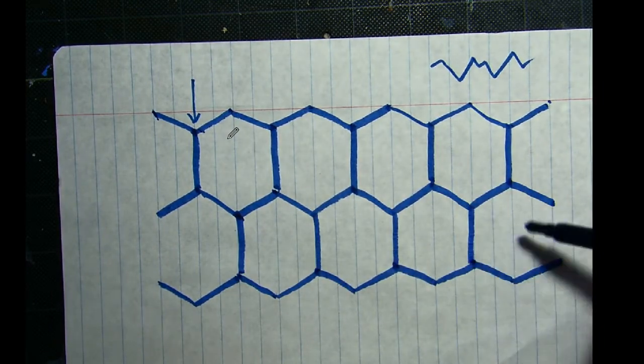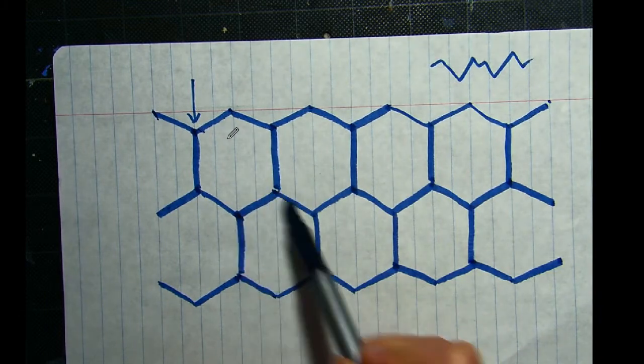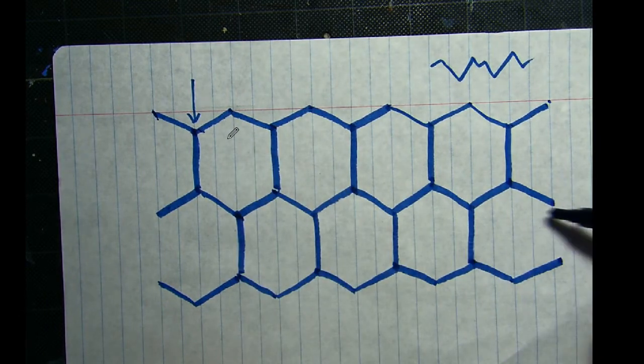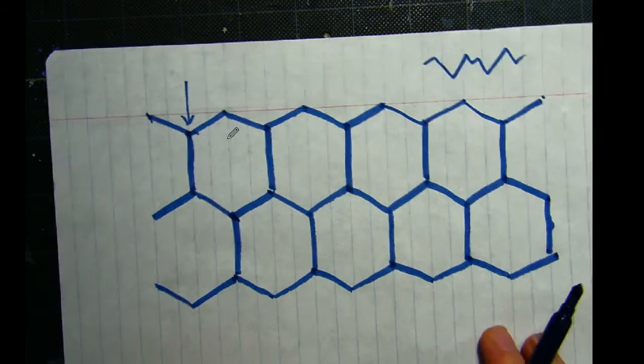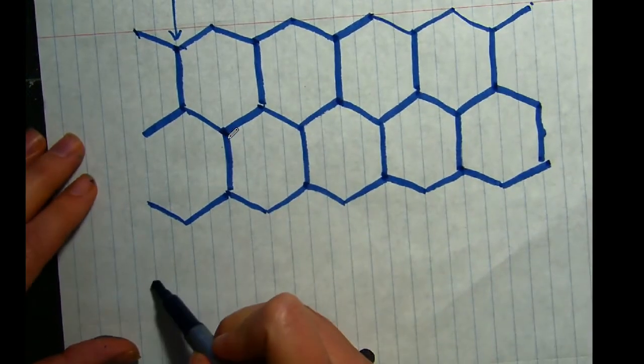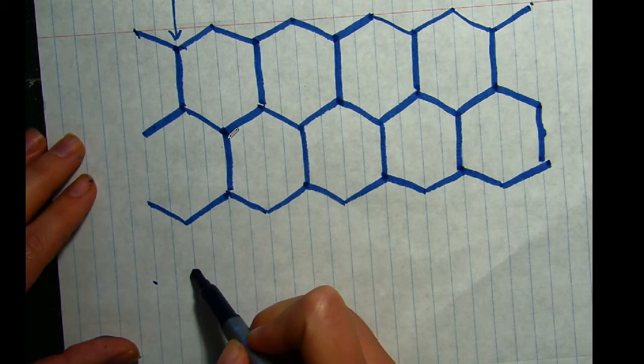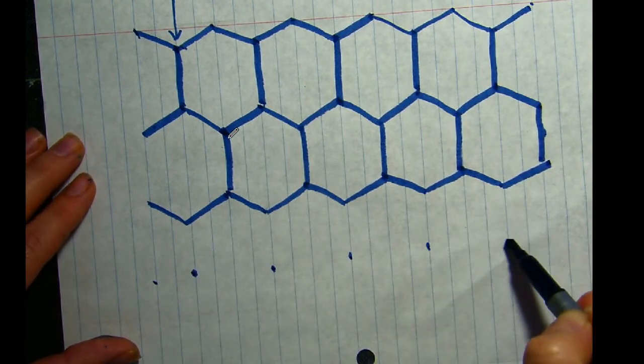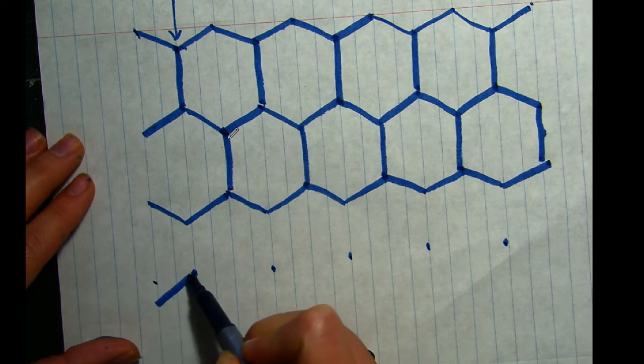And then you're connecting these points that are closest together. See how it's opposite of the first row of honeycombs. They kind of fit right in to each other. They're staggered. All right, and once you have this figured out, you can go and you can use this to fill in your whole paper.